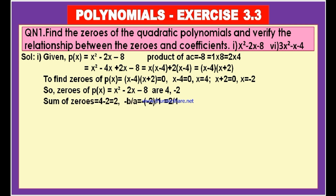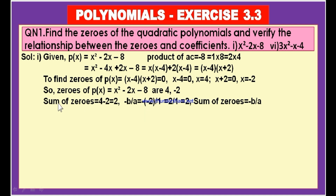Now let us find the sum of the zeros. One zero is 4 and the second zero is minus 2, so the sum of the zeros is 4 plus minus 2, which equals 2. Now let us find the value of minus B by A. The polynomial is in the form Ax squared plus Bx plus C, so A is 1, B is minus 2, and C is minus 8. Minus B by A means minus of minus 2 by 1, which is plus 2 by 1, equal to 2. The sum of the zeros equals minus B by A — both give 2.